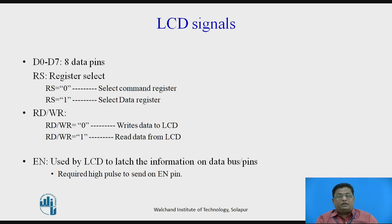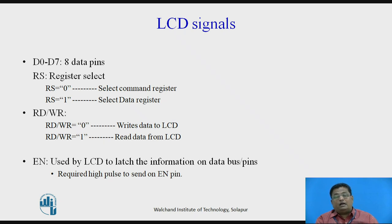The LCD has D0 to D7 data pins. Whatever character is to be displayed must be sent through pins D0 to D7. There is also a need to select the LCD register. The LCD has two registers: the command register and the data register. While sending a command to the LCD, you need to select the command register by making RS equal to 0. While sending the character to be displayed, select the data register by making RS equal to 1.